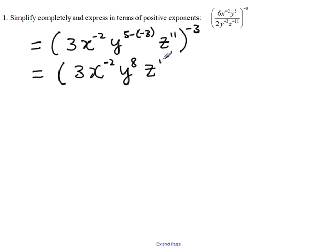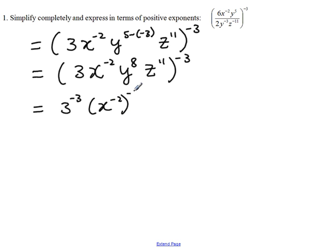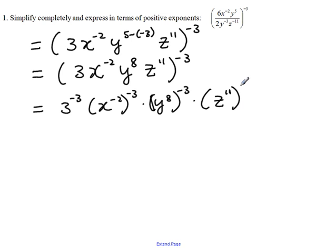And the whole thing is raised to the negative 3. Now we are going to bring the negative 3 exponent into every single factor inside the parenthesis. So we have 3 to the negative 3, times x to the negative 2 raised to the negative 3, times y to the 8 raised to the negative 3, times z to the 11 raised to the negative 3.